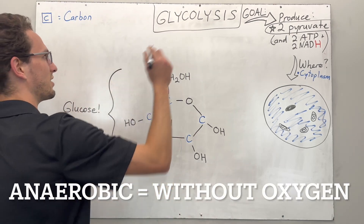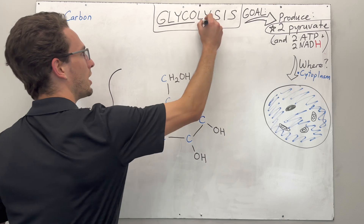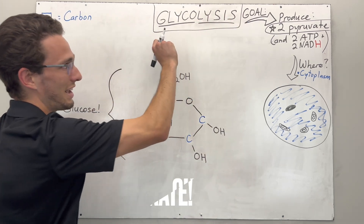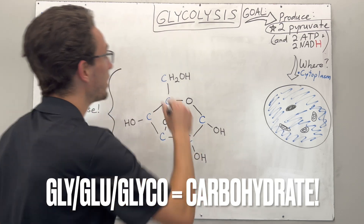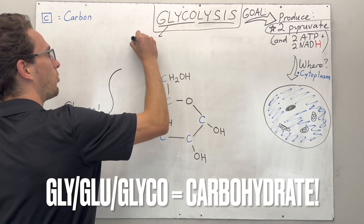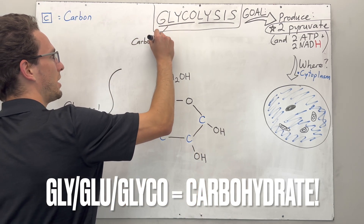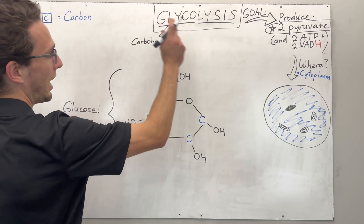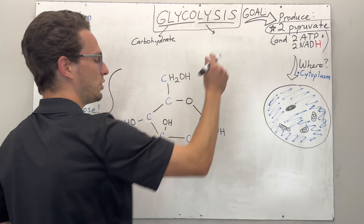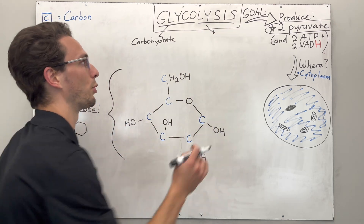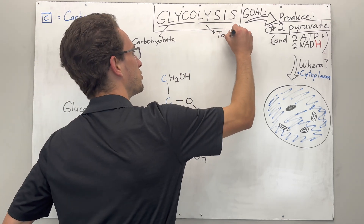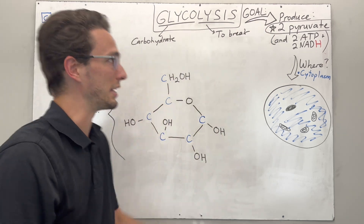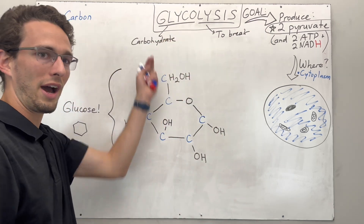Let's break down the word glycolysis. Anytime you see the prefix 'gly,' 'gluco,' or 'glyco,' this refers to some form of carbohydrate — basically just sugars. And then 'lysis': if you lyse something it means to break or burst. So in this process we are going to be breaking down carbohydrates.